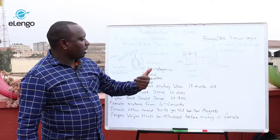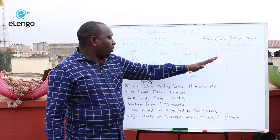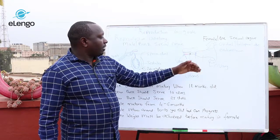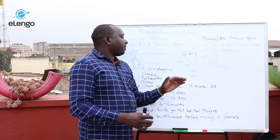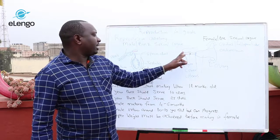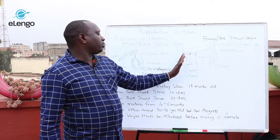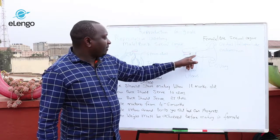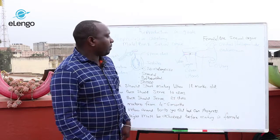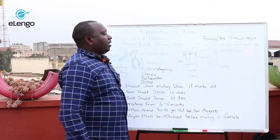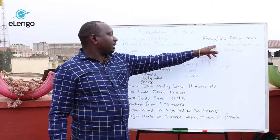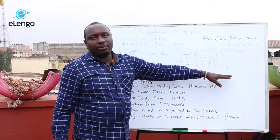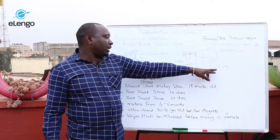We have the major parts. We have the vulva, which is the external part of the reproductive organ. Then we have the vagina, which is the part between the vulva and the cervix. Then we have the cervix, which is almost at the opening of the uterus. And we have the oviduct and the ovaries — this is where we have the female egg.